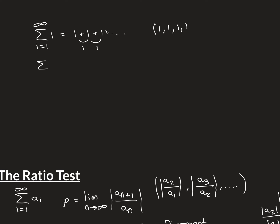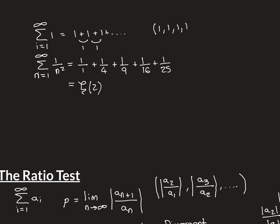For an example where rho equals 1 but the series does converge: the very famous series from n equals 1 to infinity of 1/n² — that is 1/1 + 1/4 + 1/9 + 1/16 + 1/25 + ... This series does converge; some of you might know it as the Riemann zeta function evaluated at 2, zeta(2). We're not interested in what it converges to here, just in the fact that it converges and that in this case rho equals 1.